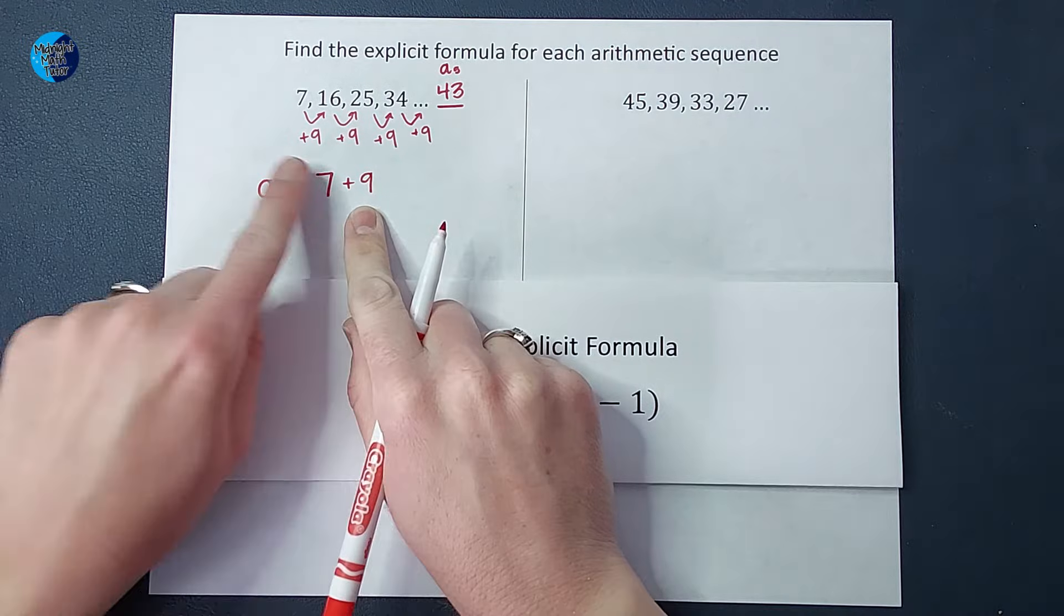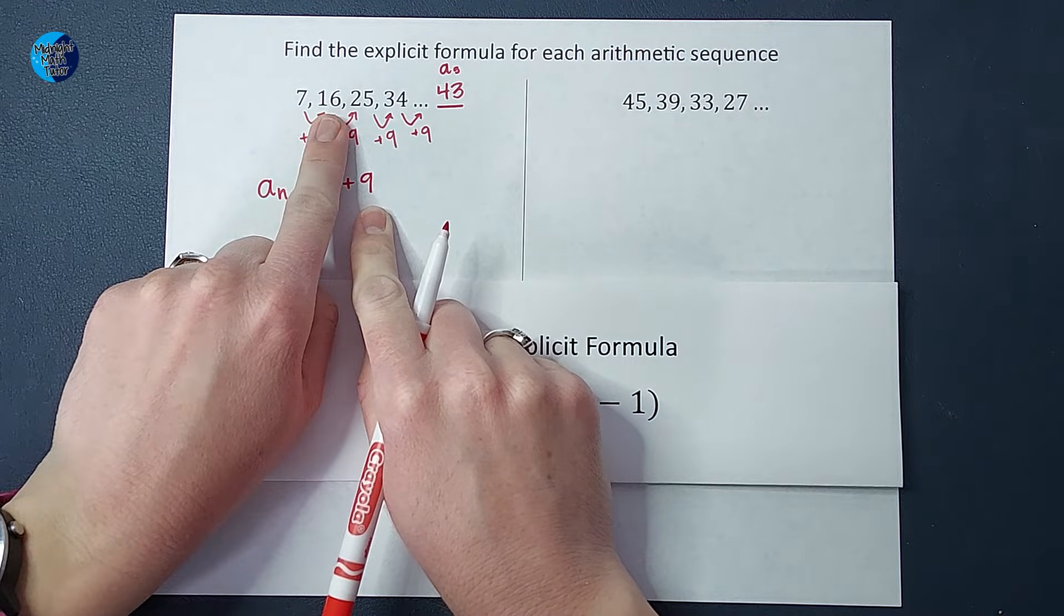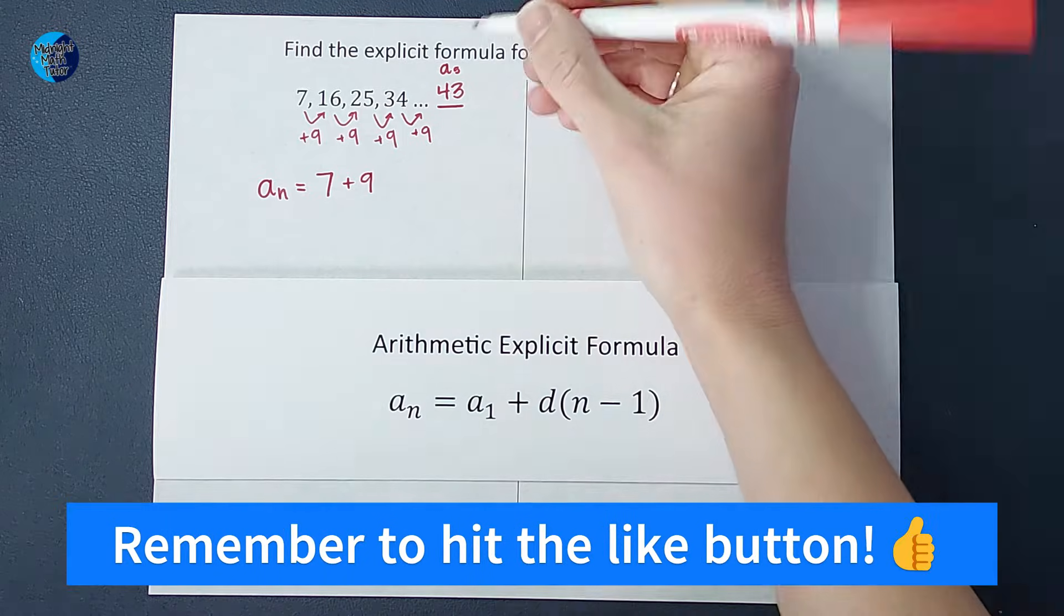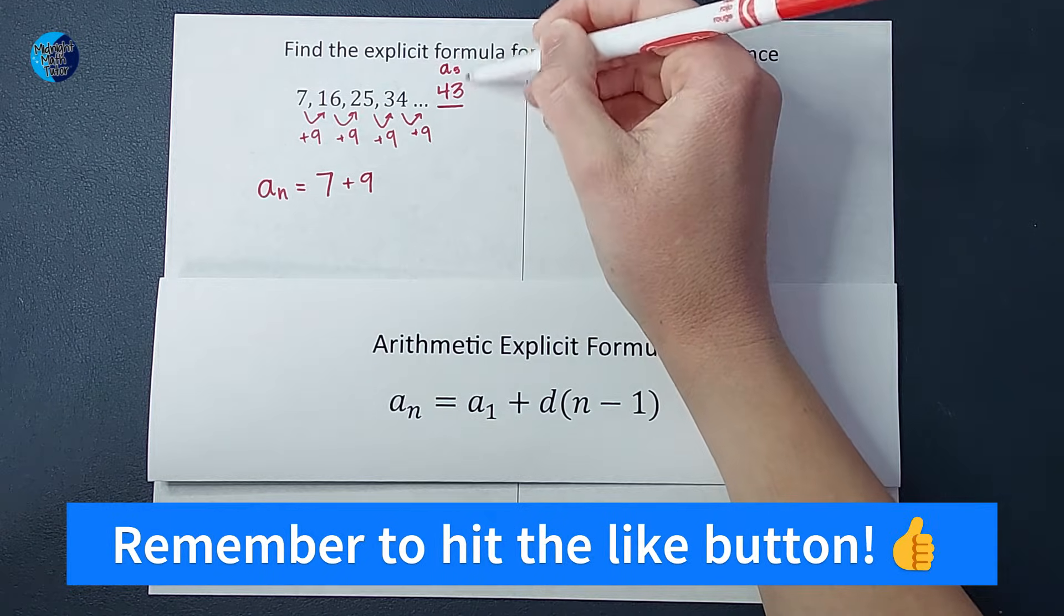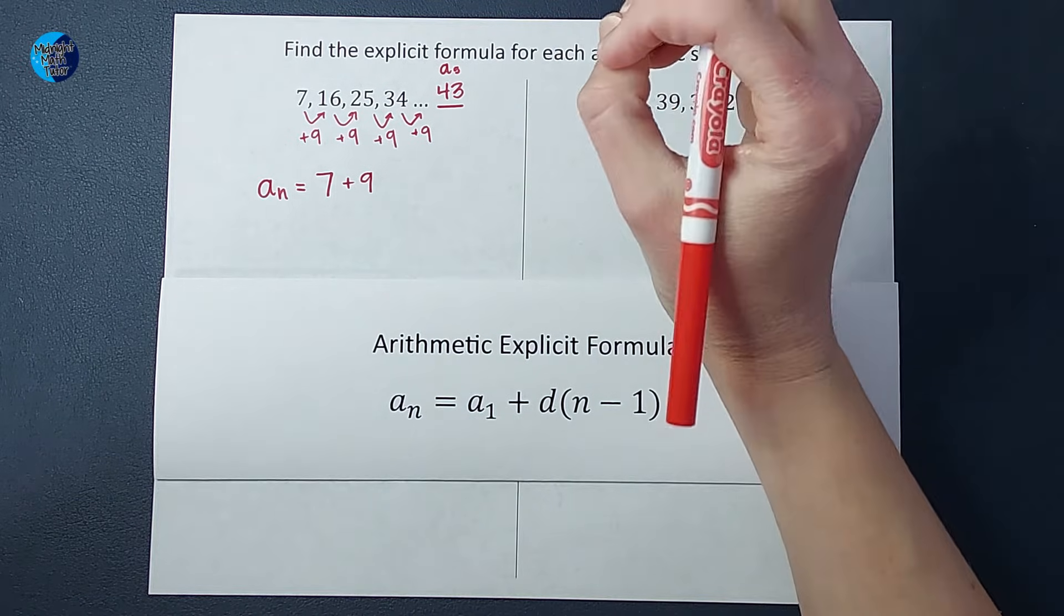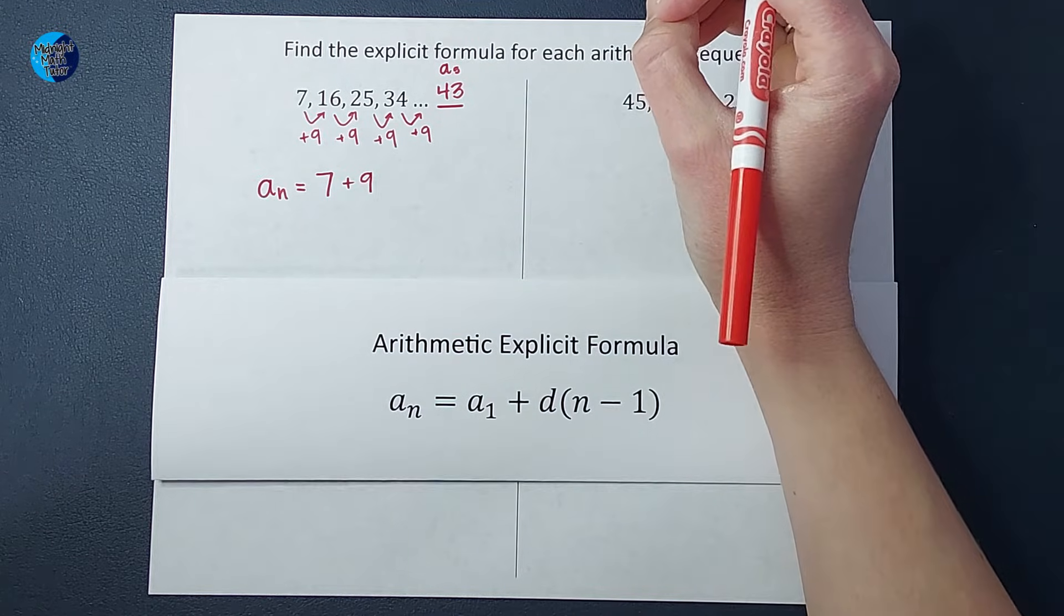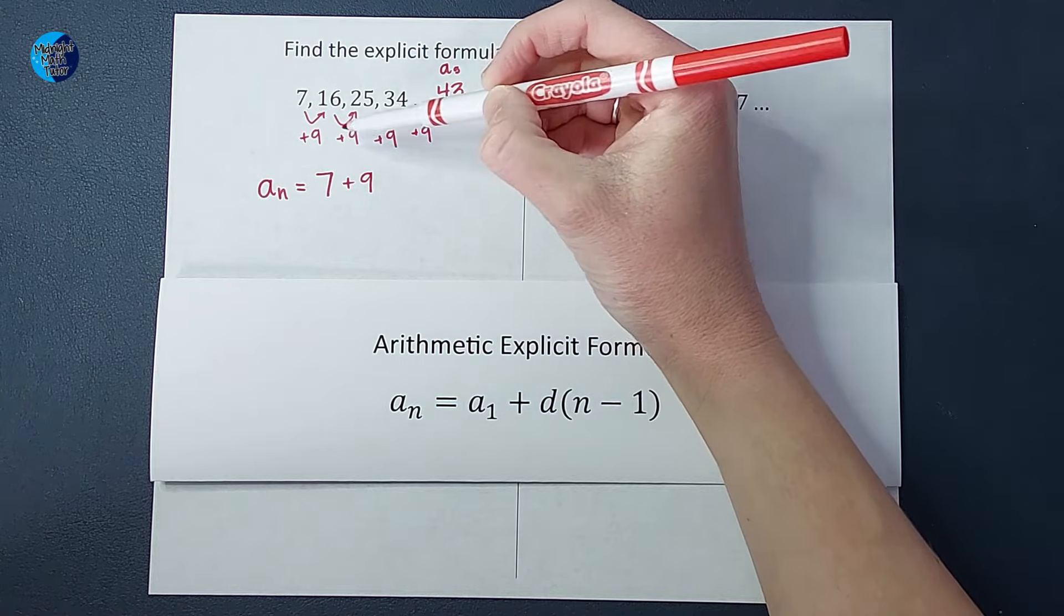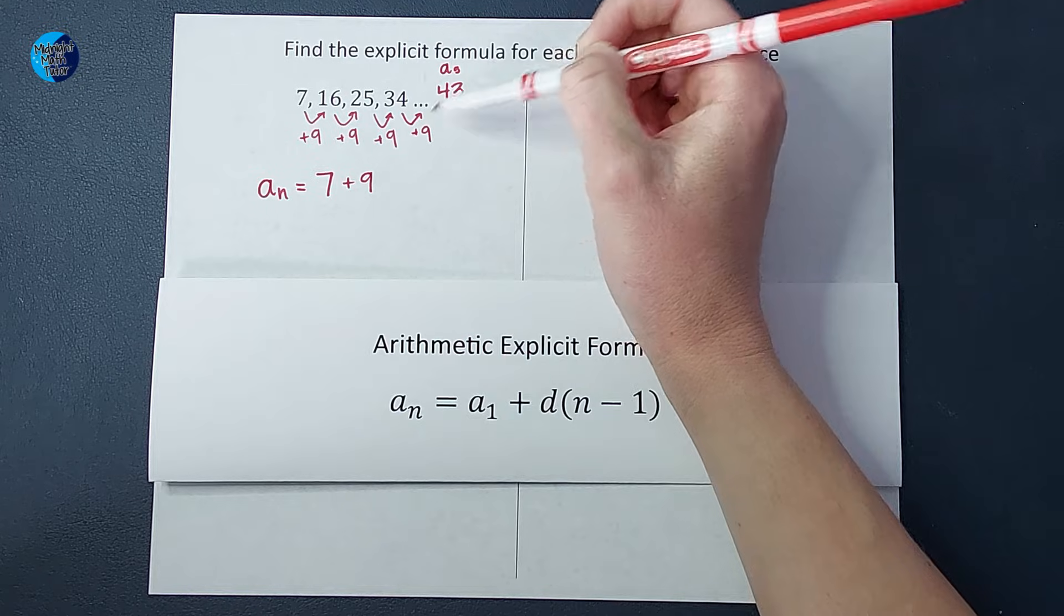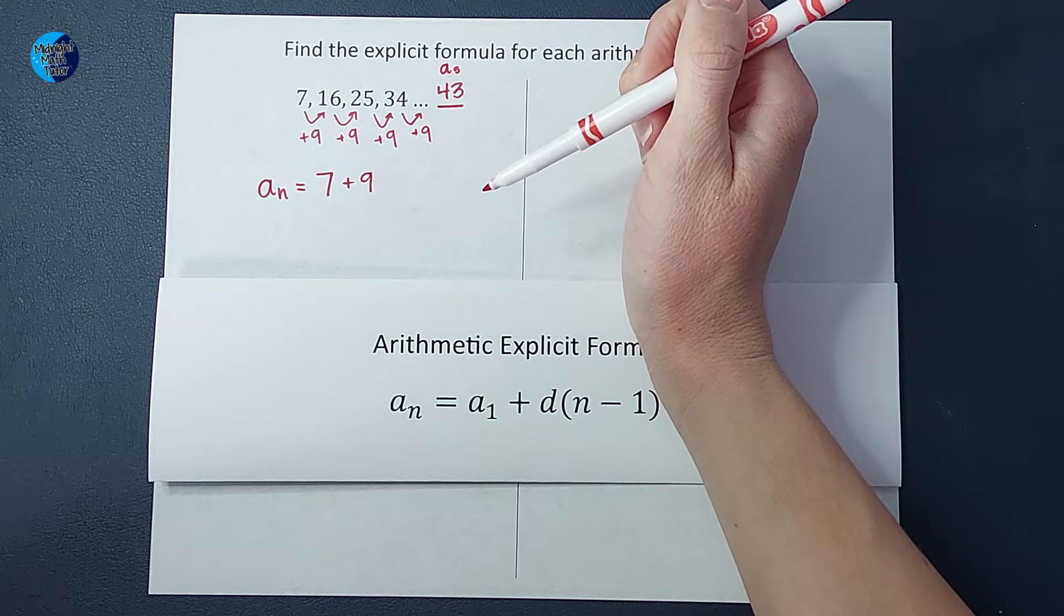But if I just do that once, that gives me the second number, right? But what about all of the rest? Well, when we found this fifth term, you'll notice how many times did we add nine? We added nine, one, two, three, four times to get that fifth term, right?